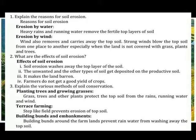What are the effects of soil erosion? Soil erosion washes away the top layer of the soil. The unwanted and other types of soil get dispersed on the productive soil. It makes the land barren. Farmers do not get a good yield of crops.